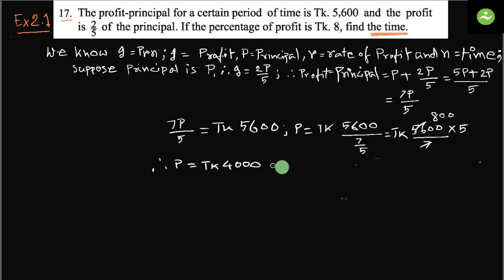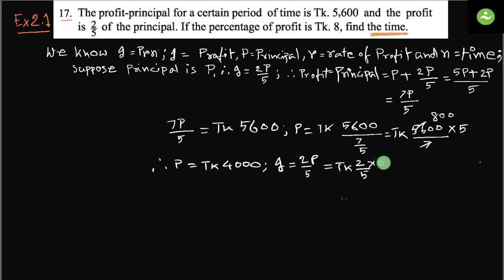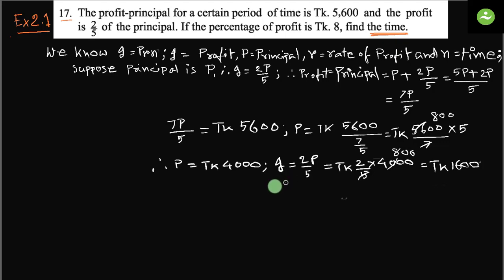Therefore P equals taka 4000. We also get the value of I, because I is two-fifths of P. Two-fifths of 4000 equals taka 1600. This is the value of I, or profit. So we got P equals 4000, we got I equals 1600, and we know R equals 8 percent.